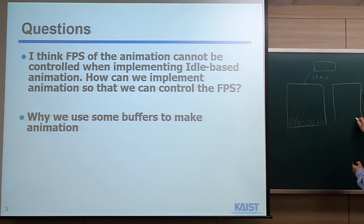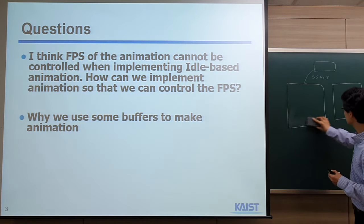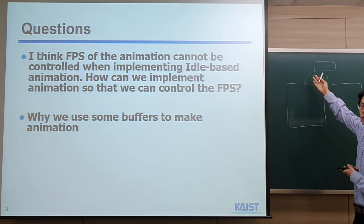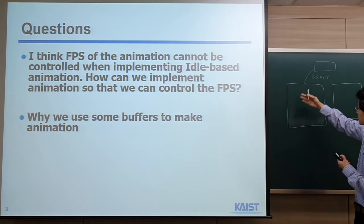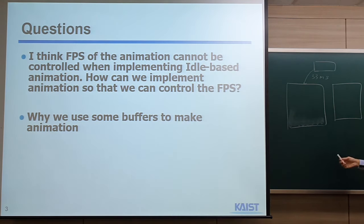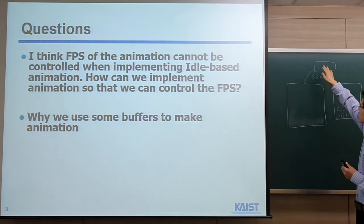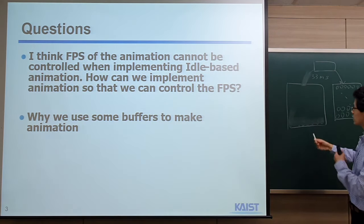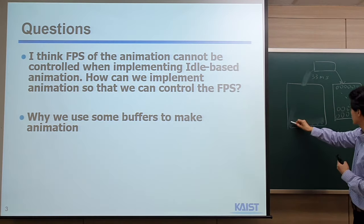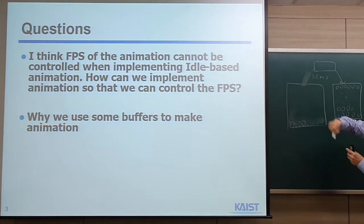With double buffering, suppose we don't want to show the drawing process. Initially, we set one buffer to display on the monitor — maybe initialized with blue color. While displaying that, we keep drawing into the back buffer, even if it takes a few seconds. Once we're done filling the back buffer, we swap buffers and let the display monitor show the new content. While drawing the next frame, we keep showing the previous completed frame. That's the main reason for using double buffers.